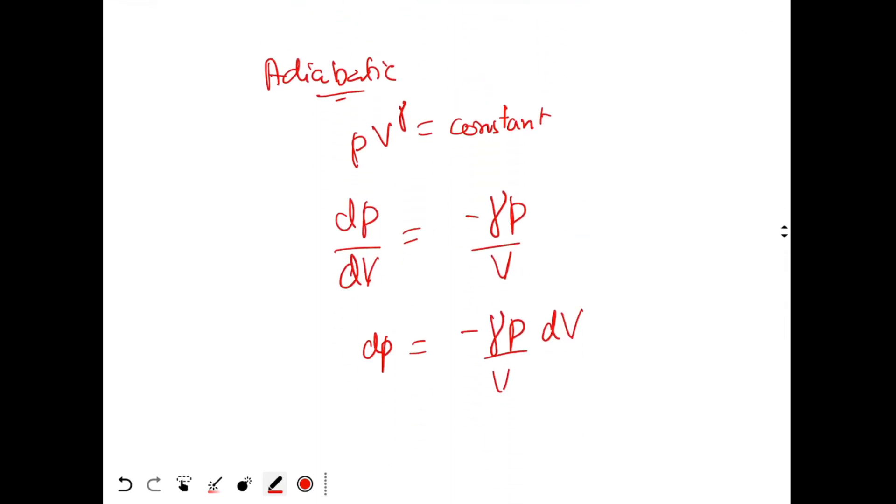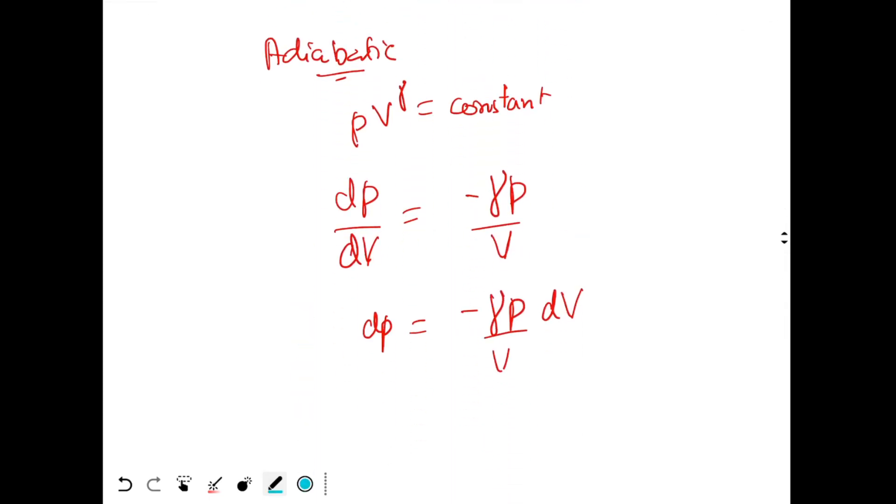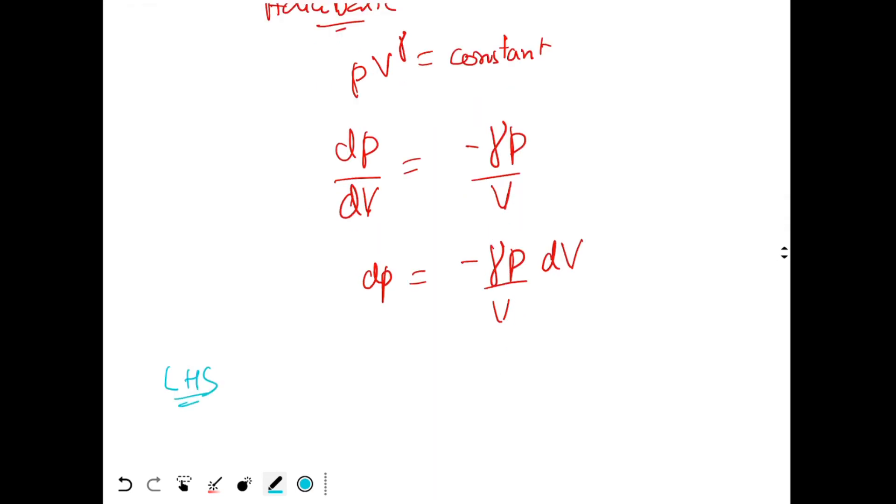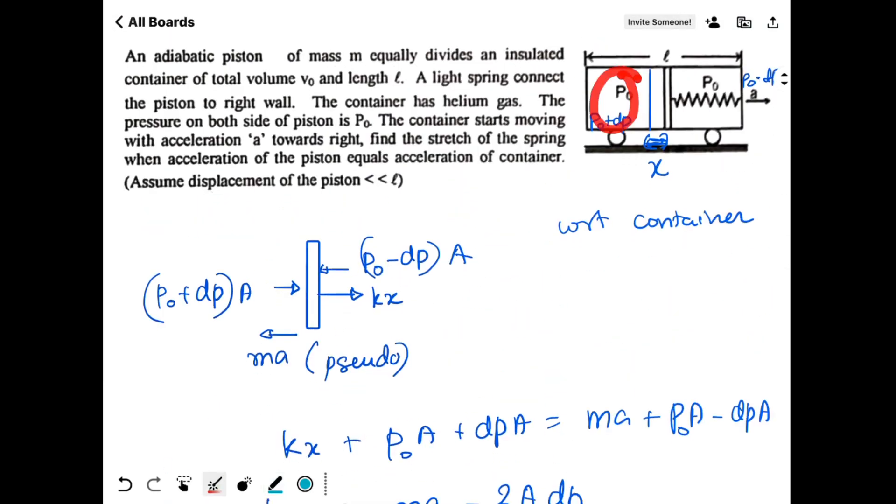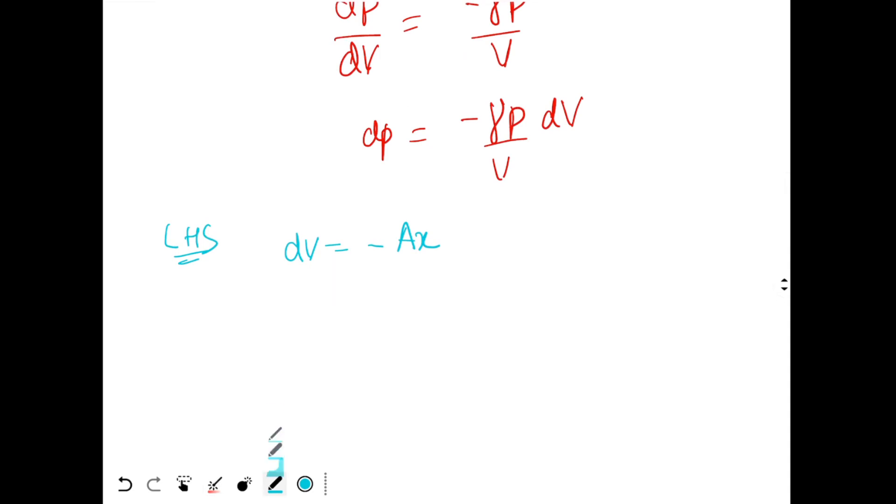Now what should we do? For the container on the left side, for LHS section of the container, DV is minus A times x because the volume over here is decreasing. So DP will be gamma P by V times AX.